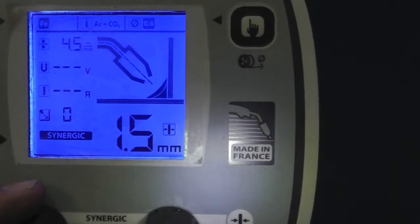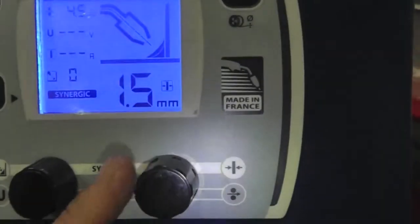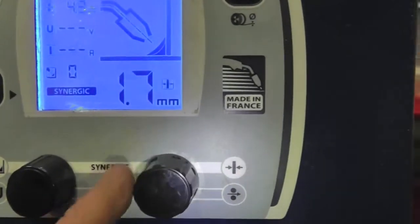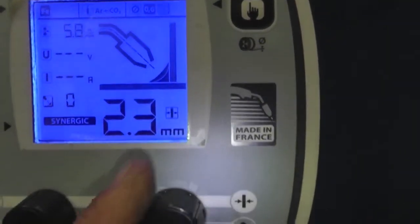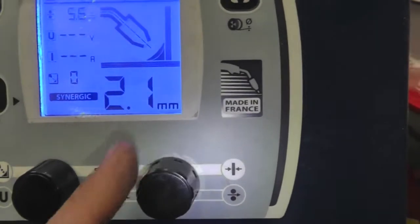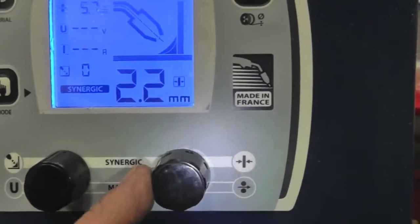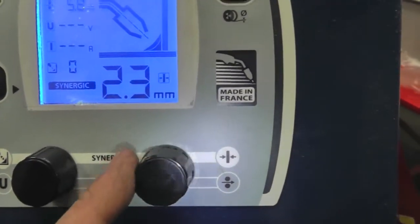So zero will be Synergy. As we go up on the plate thickness, we can see the wire feed speed increase with it. So basically on zero, wherever you set this, it's going to weld lovely.